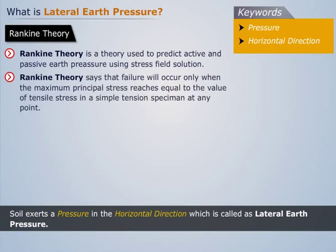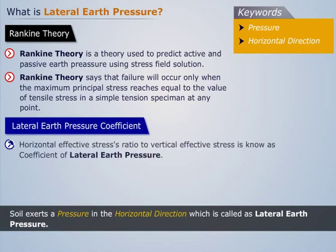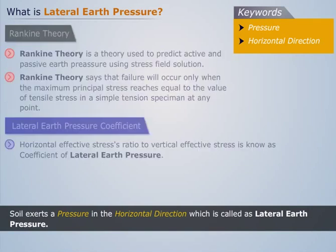Rankine theory says that failure will occur only when the maximum principal stress reaches a value equal to the tensile stress in a simple tension specimen at any point. The ratio of horizontal effective stress to vertical effective stress is known as the coefficient of lateral earth pressure.